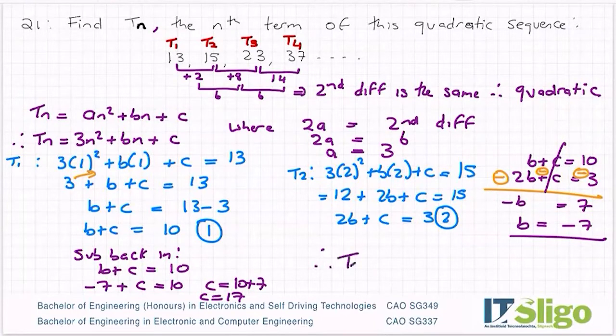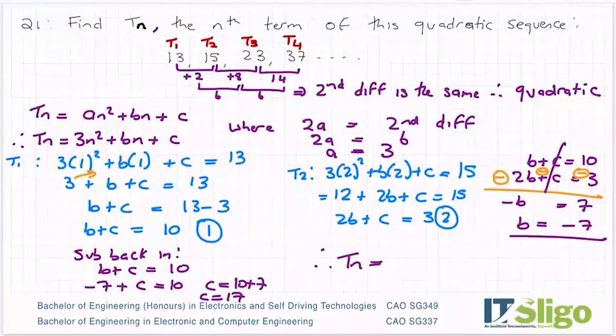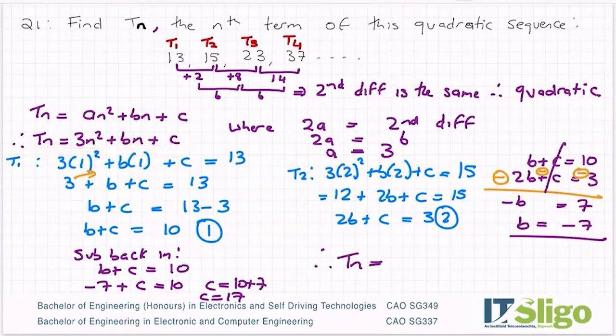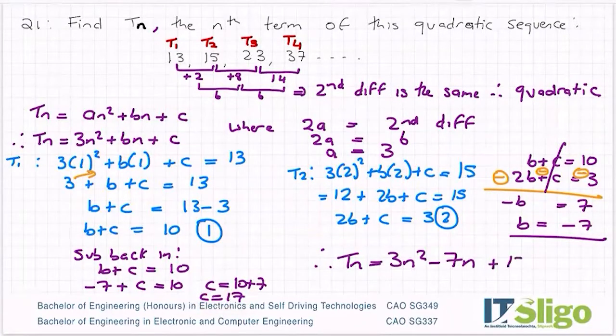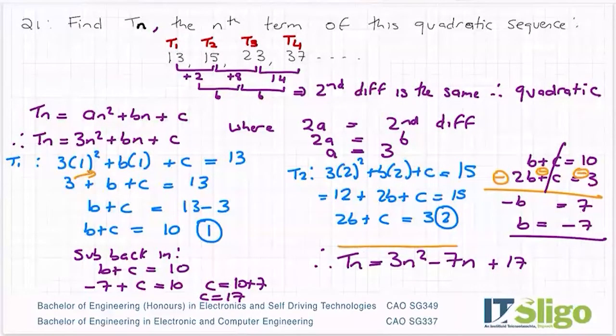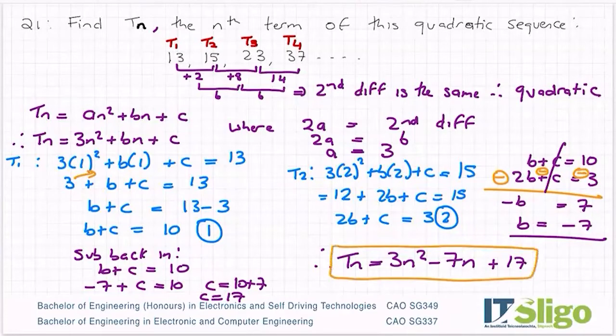So therefore, I can then fill in my a, my b and my c into my general form. So I have 3n squared - I'd already figured out what a was from here. My b is minus 7, so I have minus 7n, and my c is 17. So that is then a Tn formula that will give me any term in my sequence.